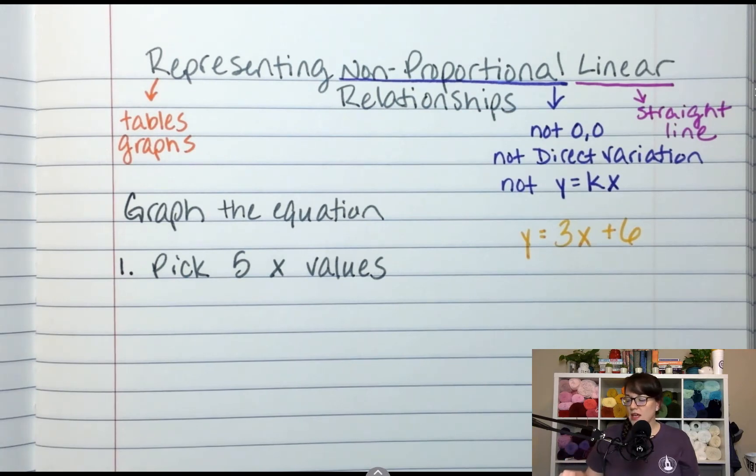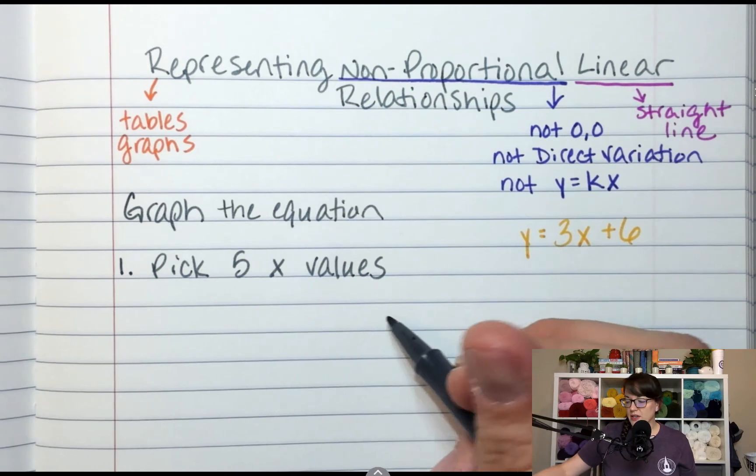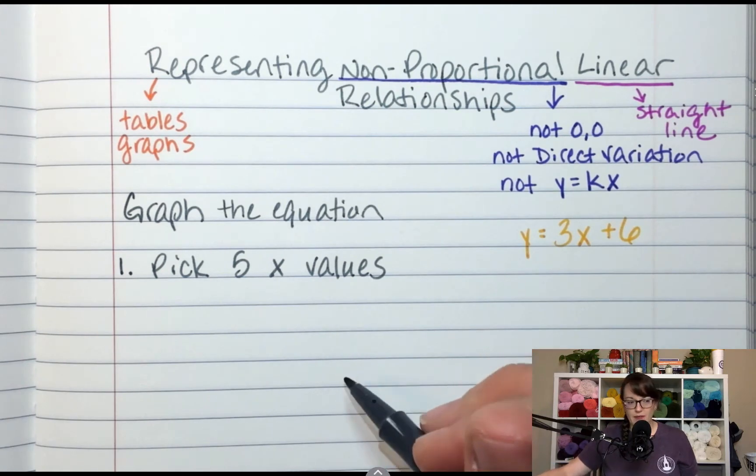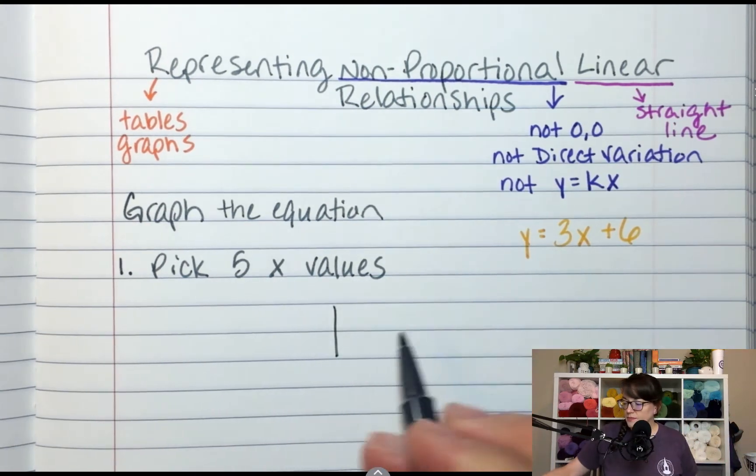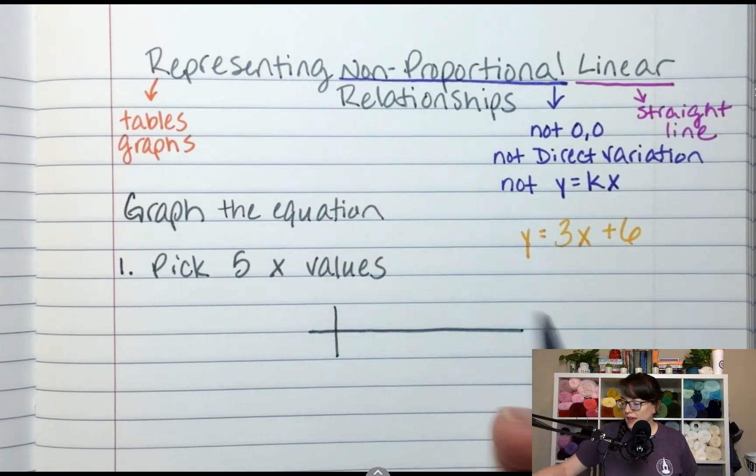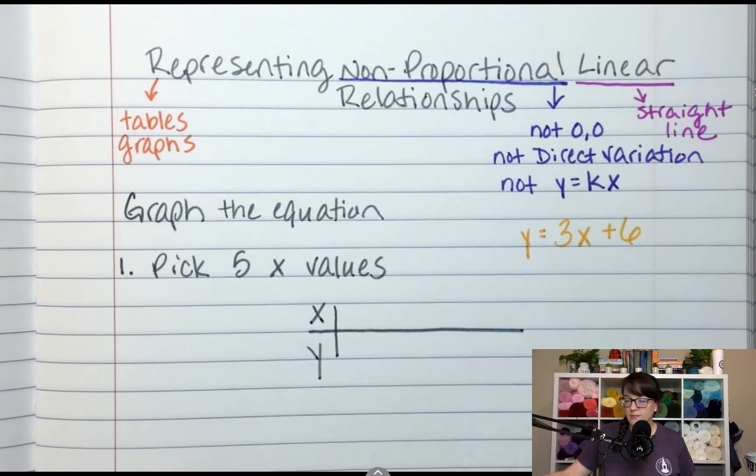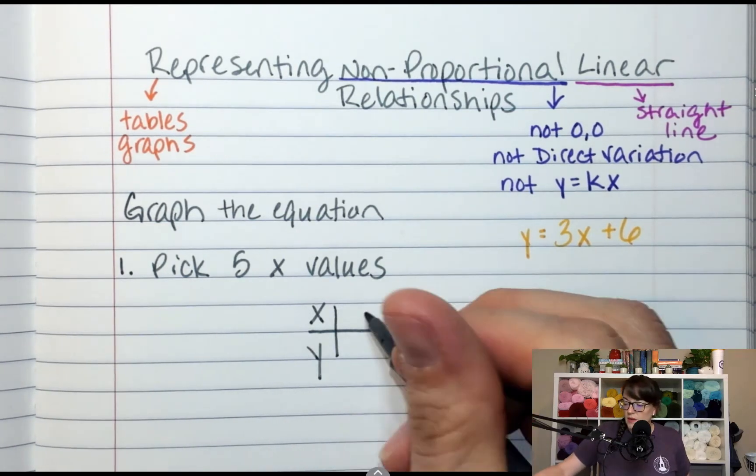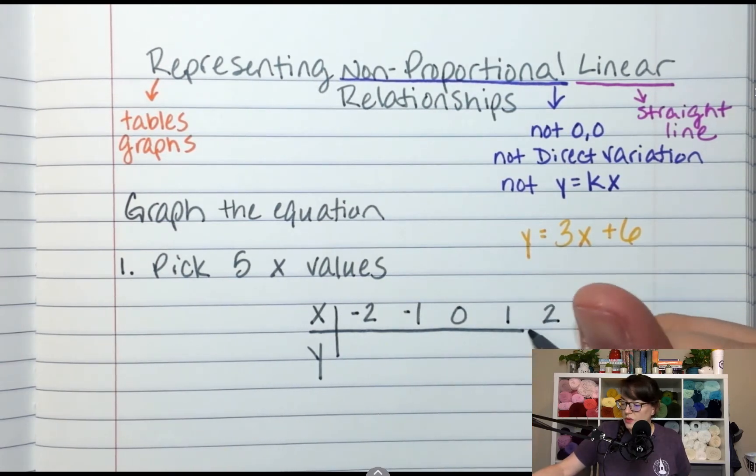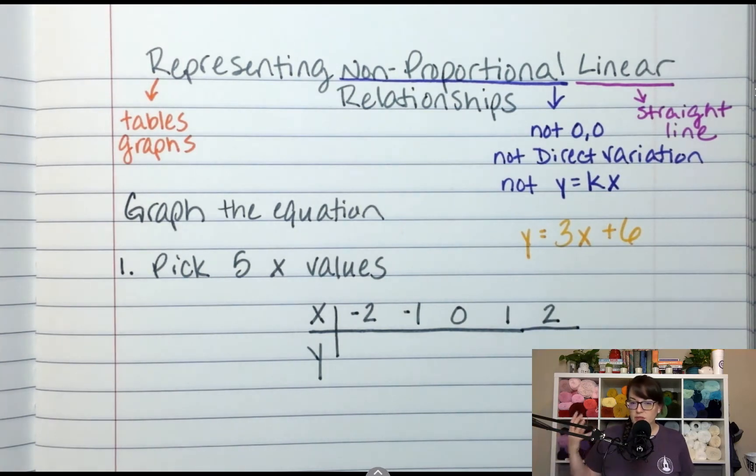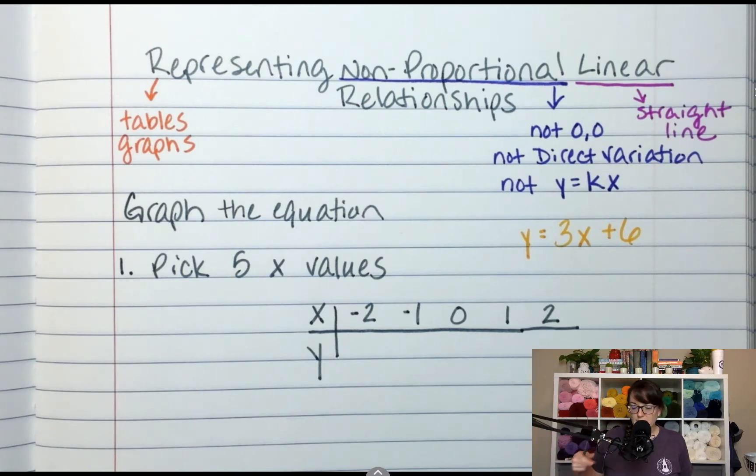Generally, you want to pick ones that are going to be close to the origin because when you graph them, you don't want to have to go out to like 500. You want to stay pretty close to 0,0. So we're going to make our table. So x is always on top of our table. Y is on bottom. So x values. Big popular one is negative 2, negative 1, 0, 1, and 2. So notice that we're picking those five numbers that are right next to the origin. And we're picking whole numbers. The other cool thing, you get to pick. So if it tells you to graph it and you have to pick coordinates, pick numbers that you think are going to be easy. So I've picked my five x values.